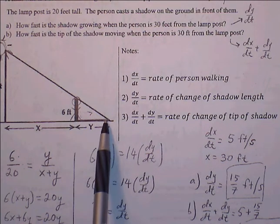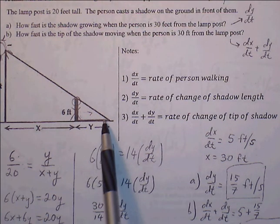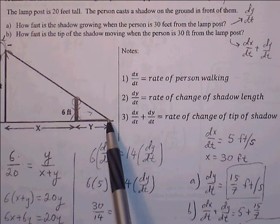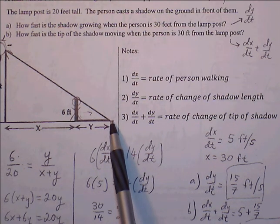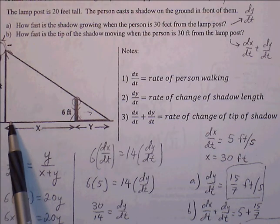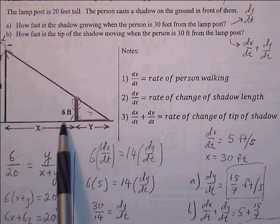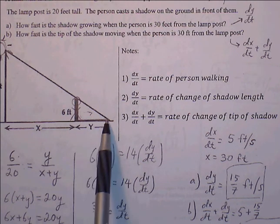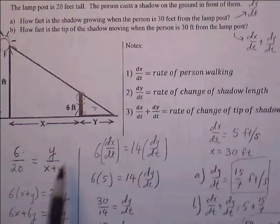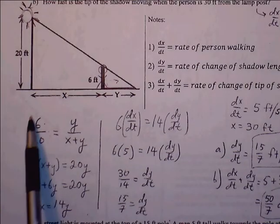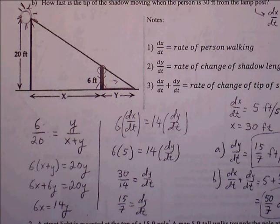The reason it is x plus y and not just x is because the length of x is not the full length of any triangle. So we have to write it as x plus y. This is only if you are representing the variables as shown here, where x represents one portion and y represents the shadow portion.